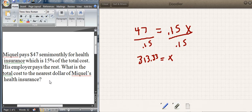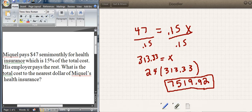It says what is the total cost to the nearest dollar of Miguel's health insurance. So this does represent the total cost. If I needed to find the employer's part, I would take $313.33 and subtract $47. But I need to find the total for the year, which is what we're essentially looking for. I'm going to take $313.33 and multiply by the number of semi-monthly periods in the year, which happens to be 24. When you multiply it out, you get $7,519.92, and that's it for that problem.